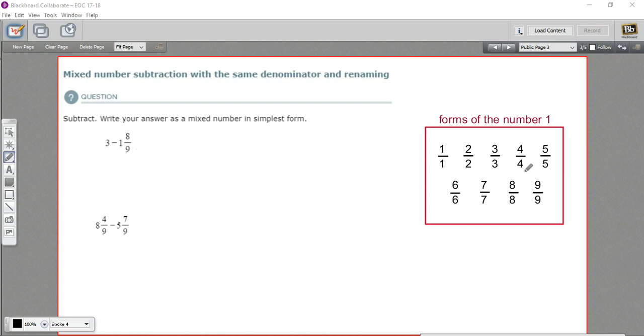One key thing to remember is that the number one can be substituted with a lot of different things. Any number over itself equals one. In this first problem we have 3 minus 1 and 8/9.